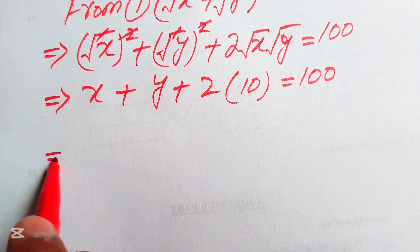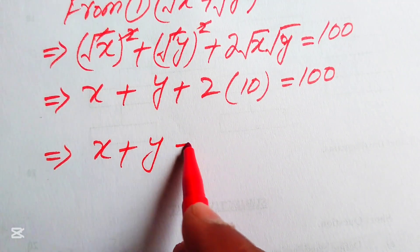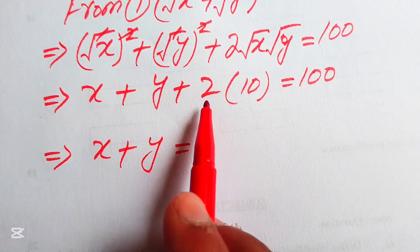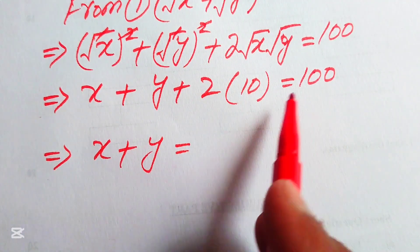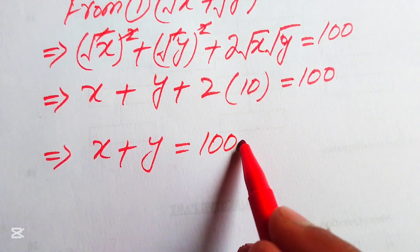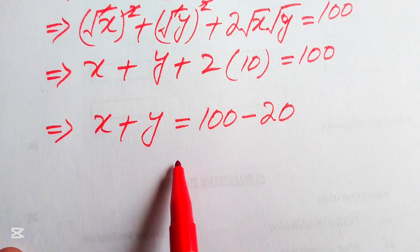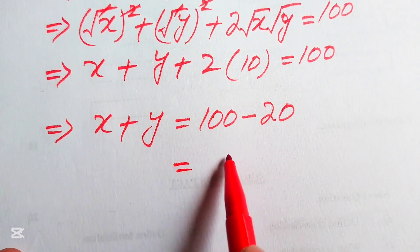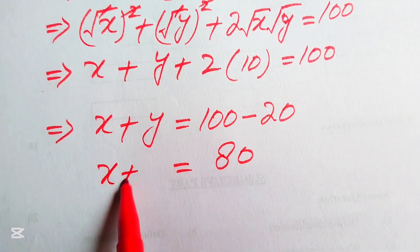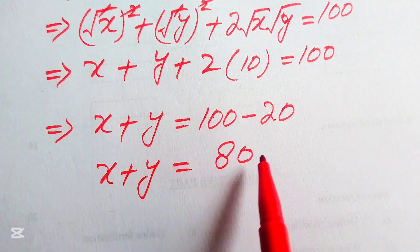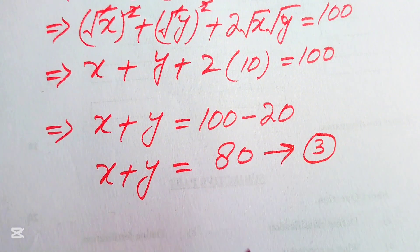We obtain x plus y plus 2 times 10 equals 100, which gives x plus y plus 20 equals 100. Moving 20 to the right-hand side: x plus y equals 100 minus 20, which equals 80. So we have x plus y equals 80, and we call this equation number 3.